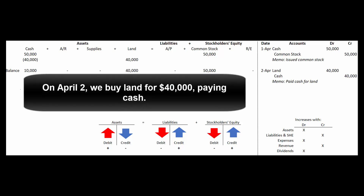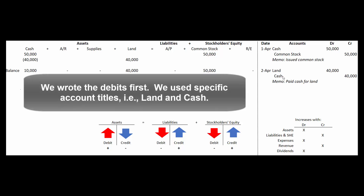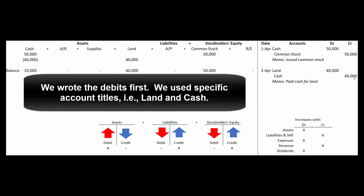Second transaction: the business pays $40,000 for land on April 2nd. Land is an asset — assets increase with debits. Cash is also an asset; if it increases with debits, it must decrease with credits. On the accounting equation, cash goes down by $40,000 and land goes up by $40,000, so we still have $50,000 worth of assets and $50,000 worth of stockholders' equity. Dollar amounts of debits equal dollar amounts of credits, and any explanation goes in the memo section.